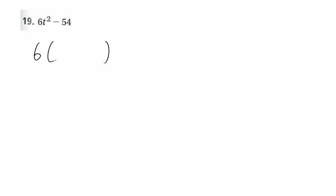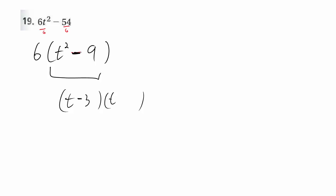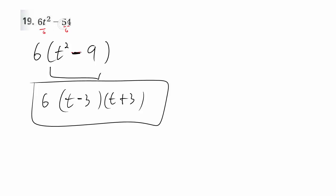We have the difficult case where the leading coefficient isn't 1 — it's a 6. The first thing you should check is if everything can be divided by 2, 3, or 6 itself. I can actually factor out the 6. Divide t squared to get t squared, divide 54 by 6 to get 9. So now this could be factored further — that's a conjugate pair: t minus 3, t plus 3, and then the 6 out front. This is the complete factored form of this polynomial.